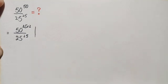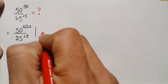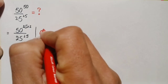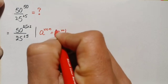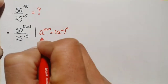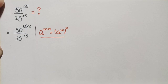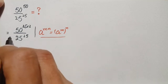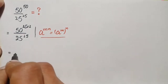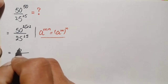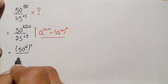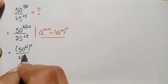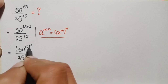In the numerator we will use an exponential identity. We will use the identity: a raised to power m times n can also be written as a raised to power m, whole raised to power n. Using this identity, we can write the numerator as 50 raised to power 25, whole raised to power 2, divided by 25 raised to power 25.